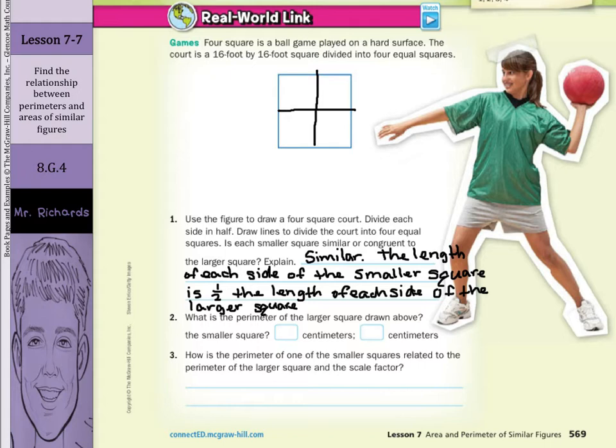And when we're asked what is the perimeter of the larger square drawn above? If we were to measure with the ruler, this side length here is 3 centimeters. And so 3 centimeters times 4 gets us 12 centimeters. And if we were to measure this side of the smaller square, we would get 1 and a half centimeters for that. And if we were to multiply that by 4 for all 4 sides, we would get 6 centimeters.